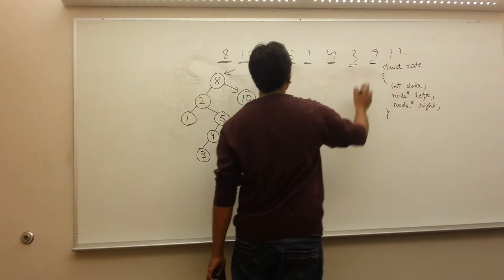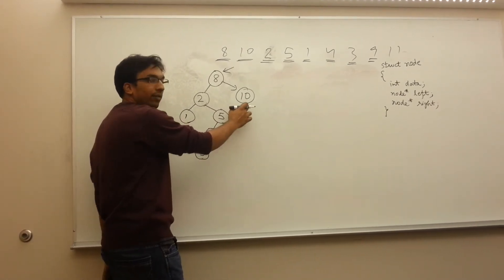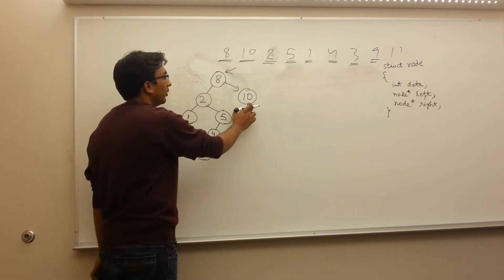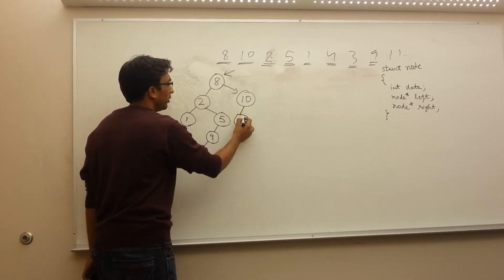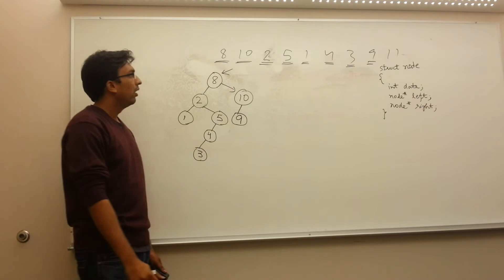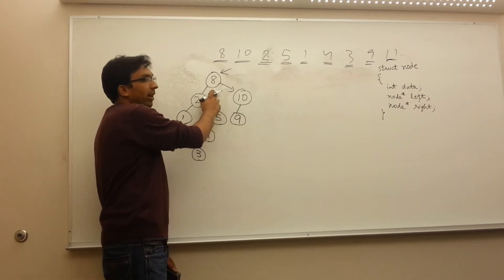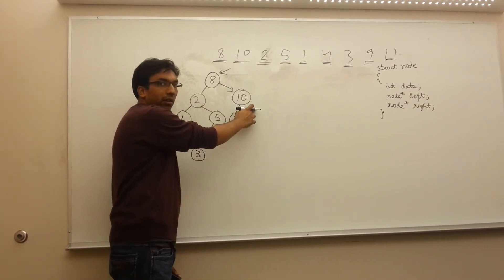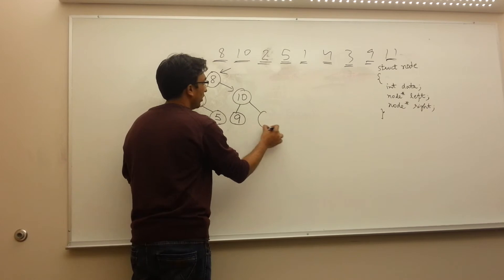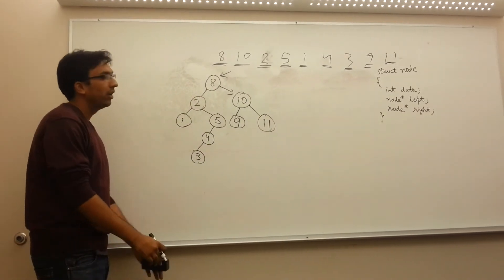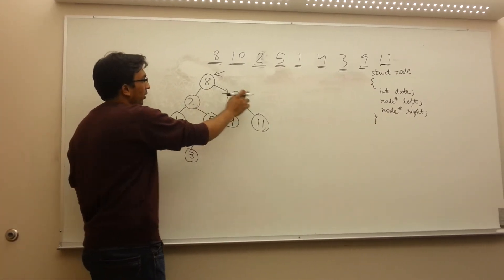Now we come to 9 — since 9 is greater than 8, it goes to its right side. Since the right side is filled, we compare 9 with 10 — 9 is smaller than 10, so it goes to the left of 10. Since there is no element on its left, we insert it there. Now we go to 11, the last element — we compare 11 with 8, it goes right; we compare it with 10, and since 11 is greater than 10 it goes right again. Since there is no element, we insert it there. This is how we insert in a binary search tree.